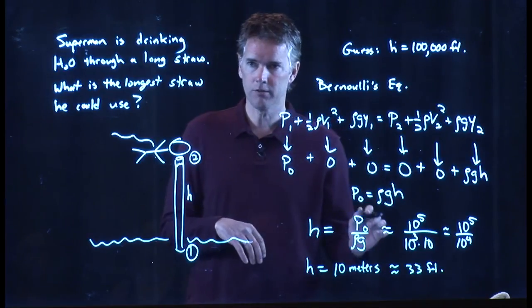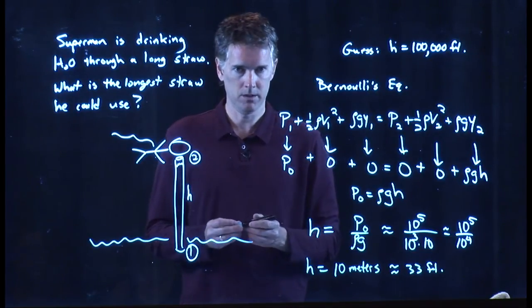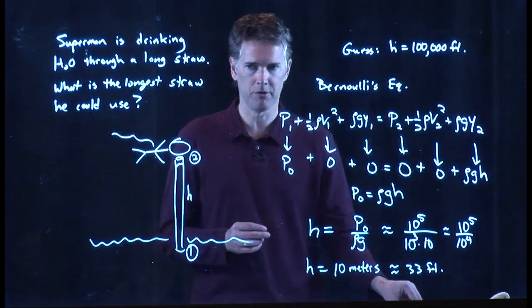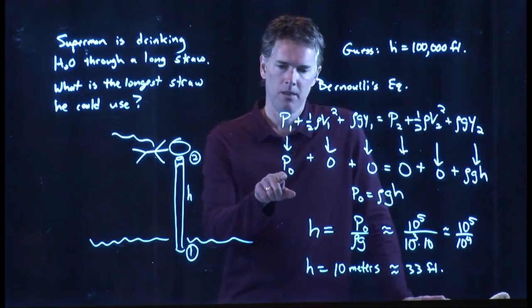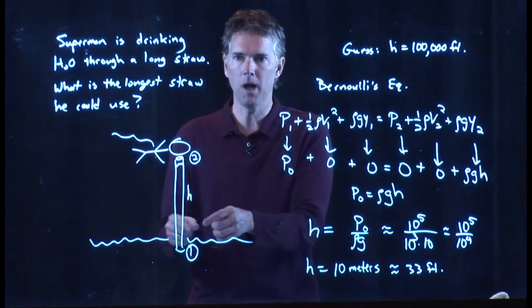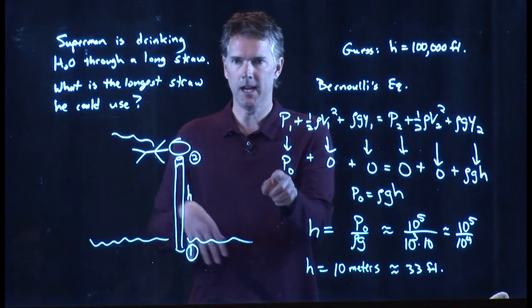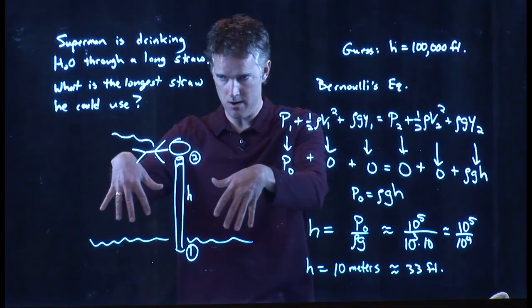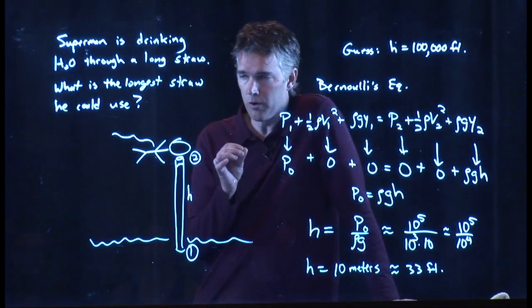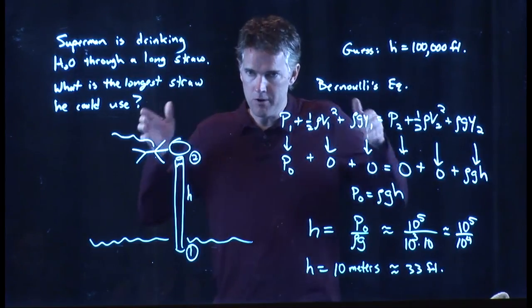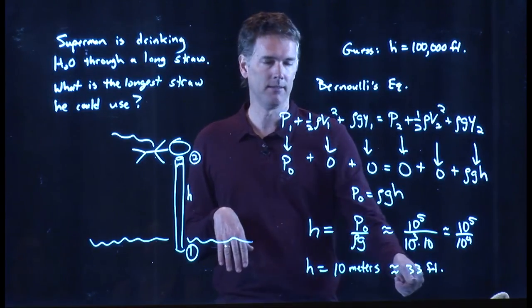10 meters is about 33 feet. That is the longest straw that Superman could use to actually get liquid up. It's 33 feet, which is not very long. It's nowhere near the atmosphere, 100,000 feet. It's only 33 feet. Why is that? Because the pressure of the atmosphere is in fact what pushes fluid up the straw. And that is a fixed number. It is gravity pulling down on all the air out here that is going to force the liquid up the straw when you lower the pressure at the other end of the straw. This is exactly what you do when you drink through a straw. You lower the pressure on one end, atmospheric pressure takes over and pushes the fluid up the straw. But it can only do that to a certain height and that height is 33 feet.